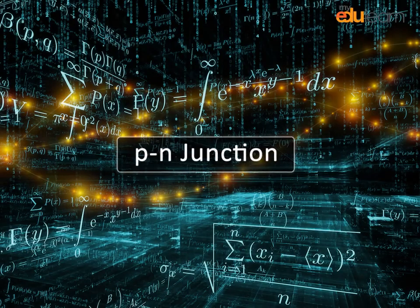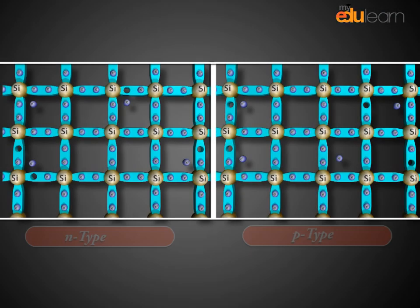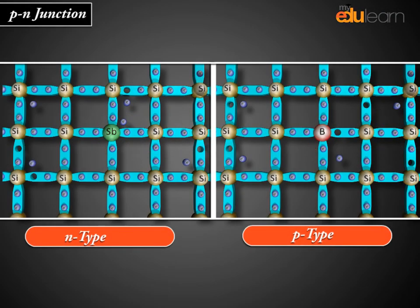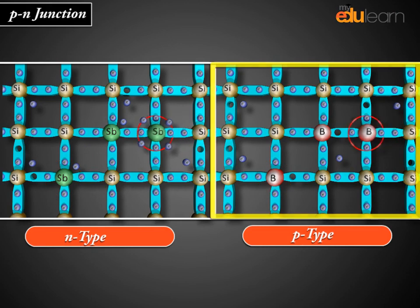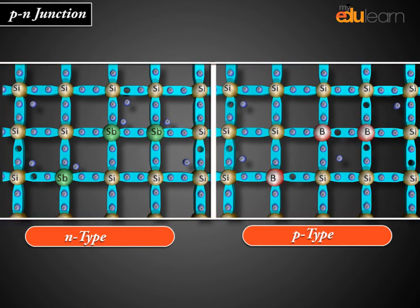P-N junction. A P-N junction is a boundary or interface between P-type and N-type semiconductors inside a single crystal of semiconductor.